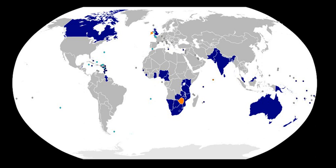The Commonwealth was first officially formed in 1931 when the Statute of Westminster gave legal recognition to the sovereignty of dominions. Known as the 'British Commonwealth', the original members were the United Kingdom, Canada, Australia, New Zealand, South Africa, Irish Free State, and Newfoundland, although Australia and New Zealand did not adopt the Statute until 1942 and 1947 respectively.